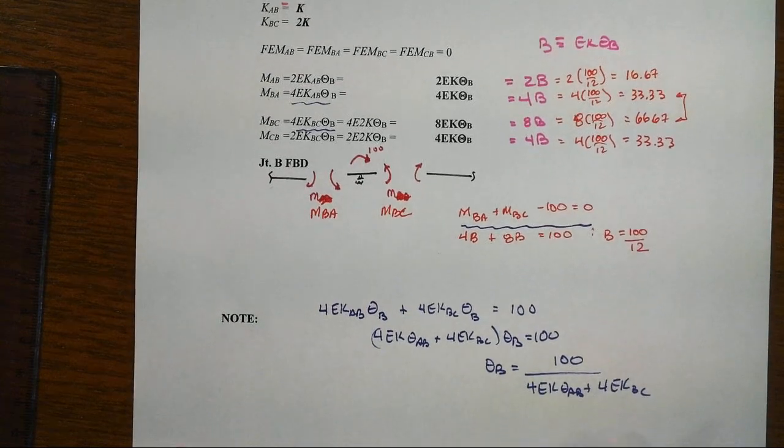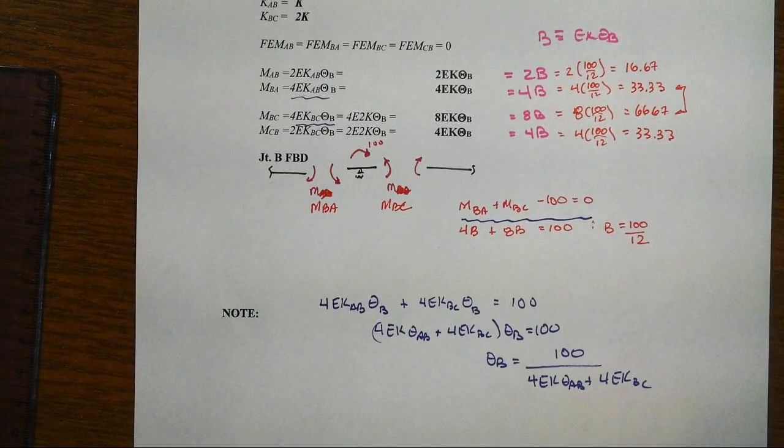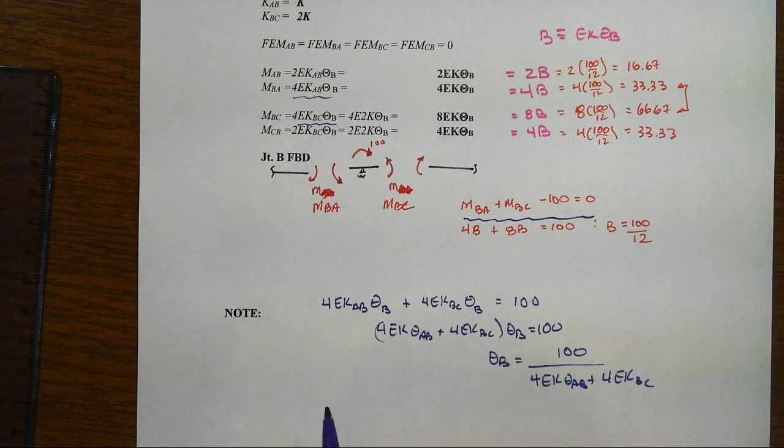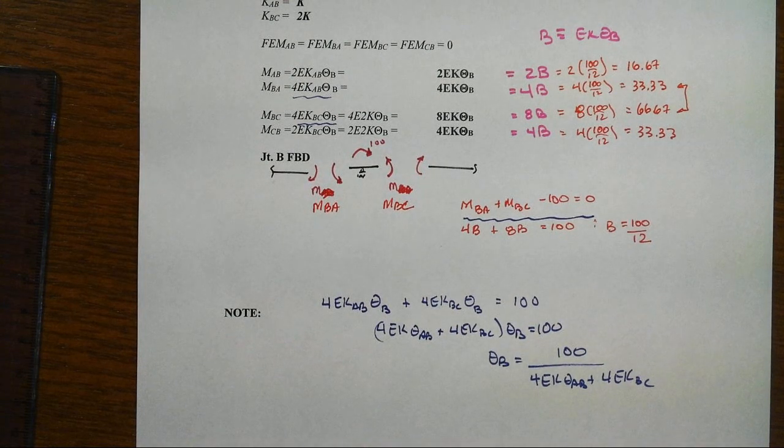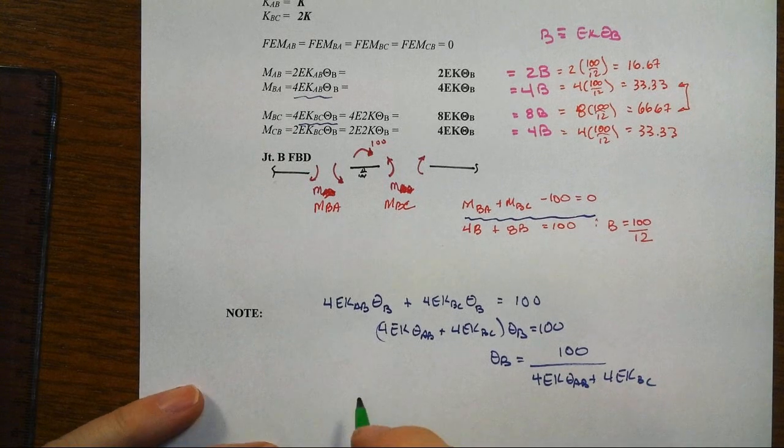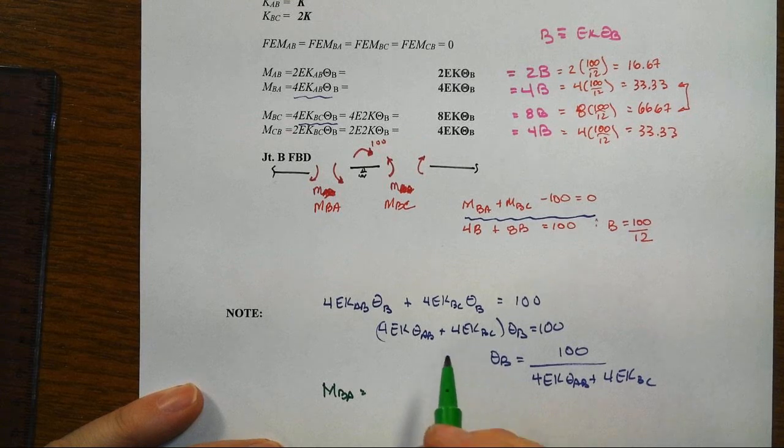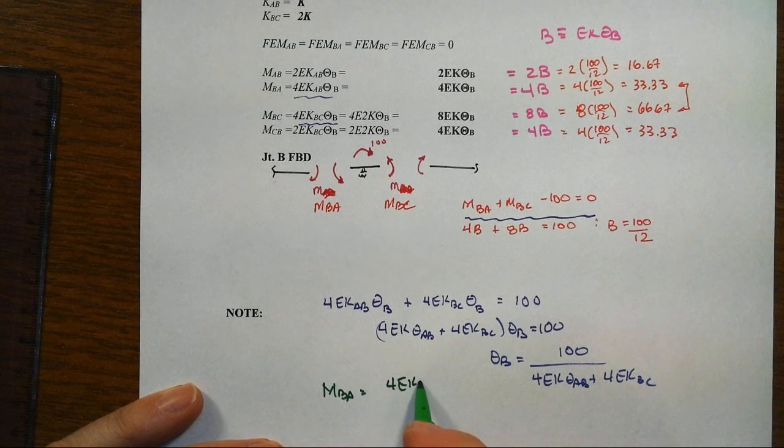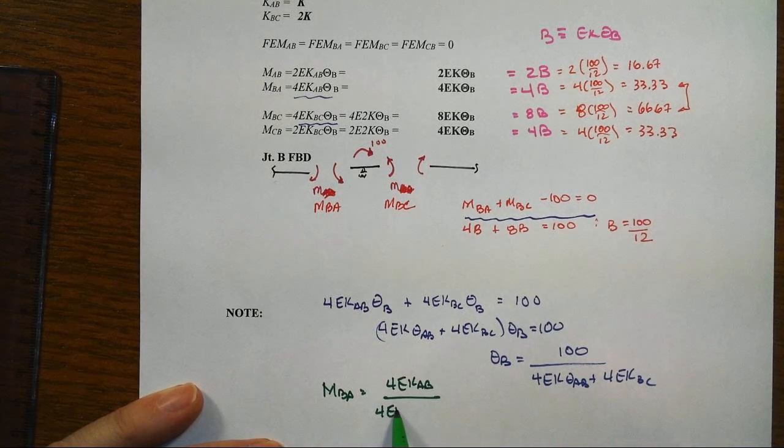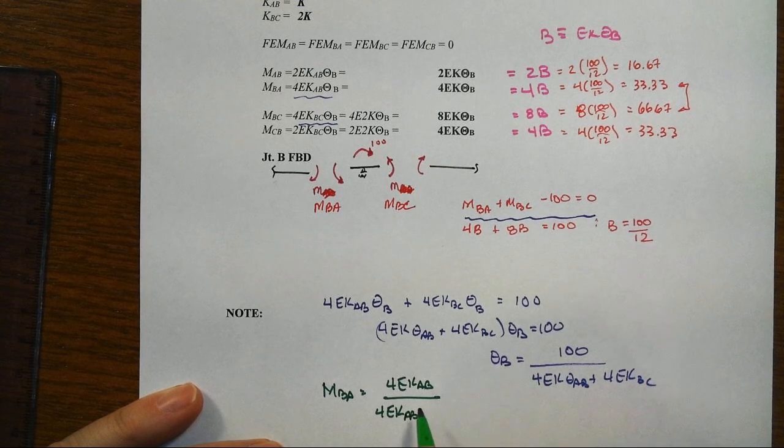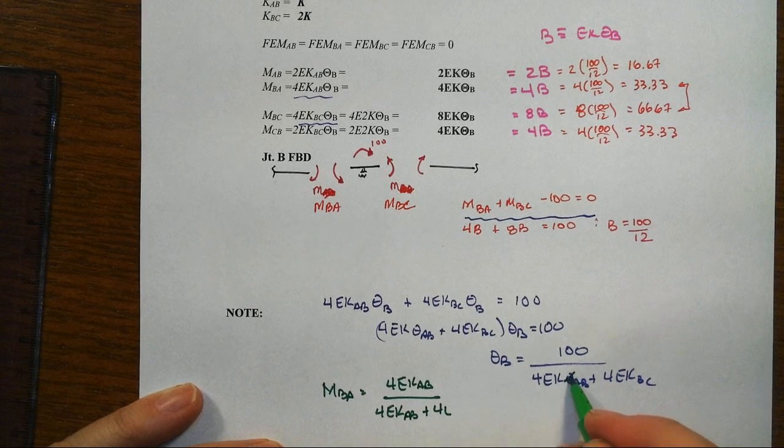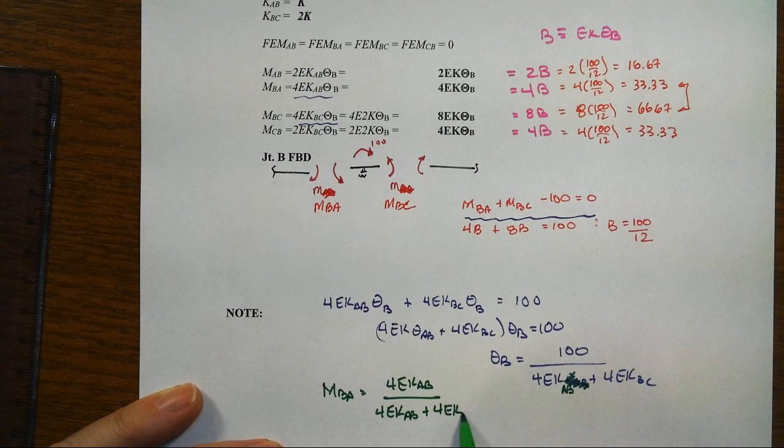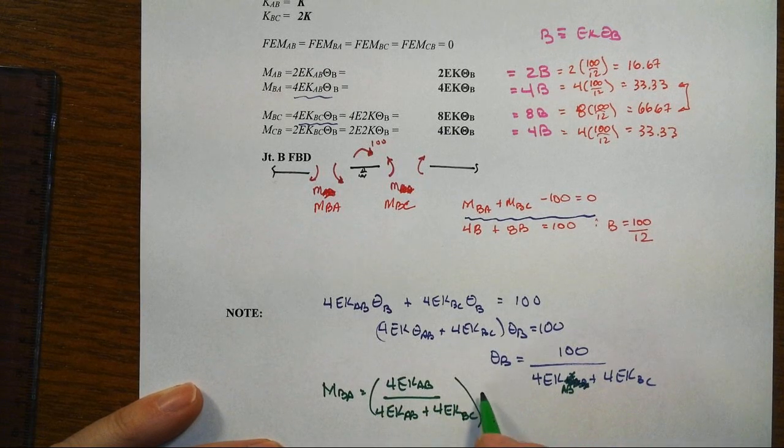When you then go in and substitute this back into the slope deflection equation for the member moment, look now what is going to turn out to be the case. Let's notice that our MBA will be equal to 4EKAB thetaB, and thetaB is all this stuff, so we'll have 4EKAB over the sum of those stiffnesses, that should just be AB. We got the sum of those stiffnesses then times this 100.